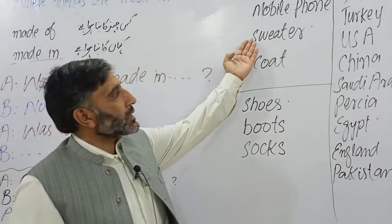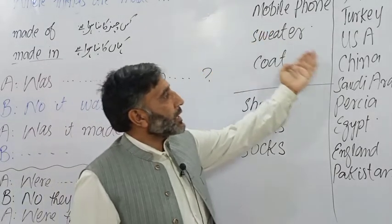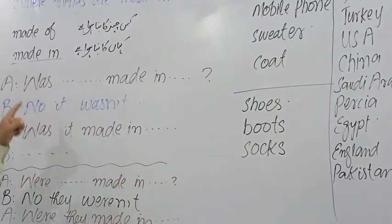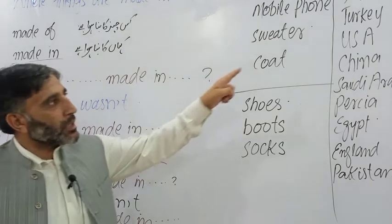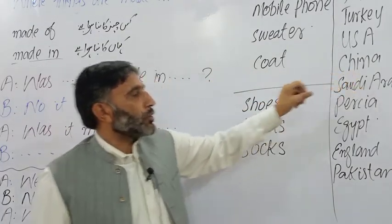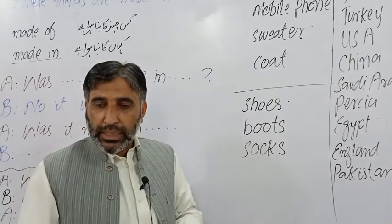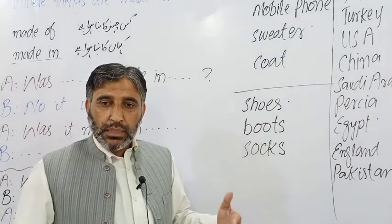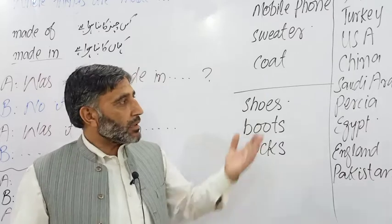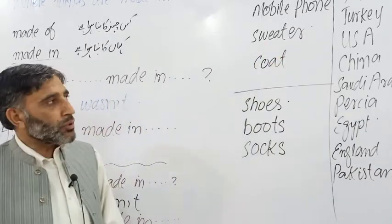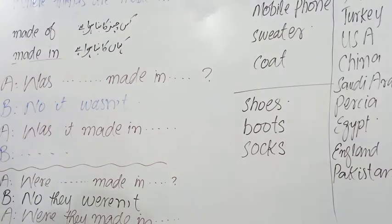It's made in — na kaho. It was made in China — yeh kehna chahiye. Because yeh maazi mein bana hua tha. So: No, it wasn't. It was made in China. Isi tarah agar ek se zyada alfaz ho — ek se zyada chizein hon. Shoes hain, boots hain, ya socks hain, ya markers hain — matlab jab zyada chizein hon ke baare mein puchhtay lain, toh phir was ki jagah kiya lain ge?